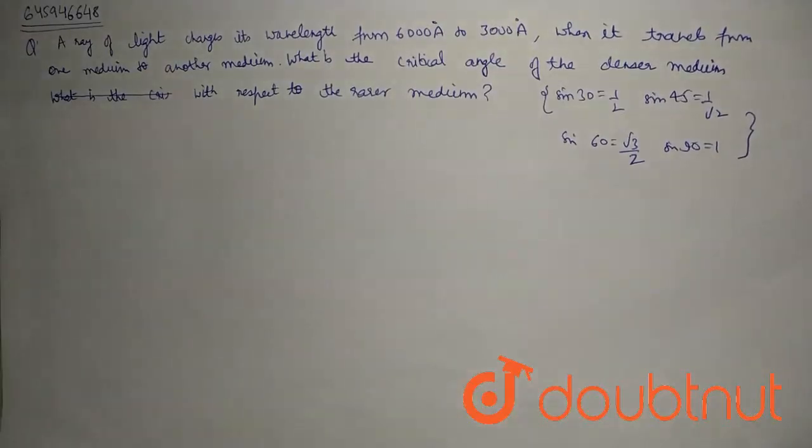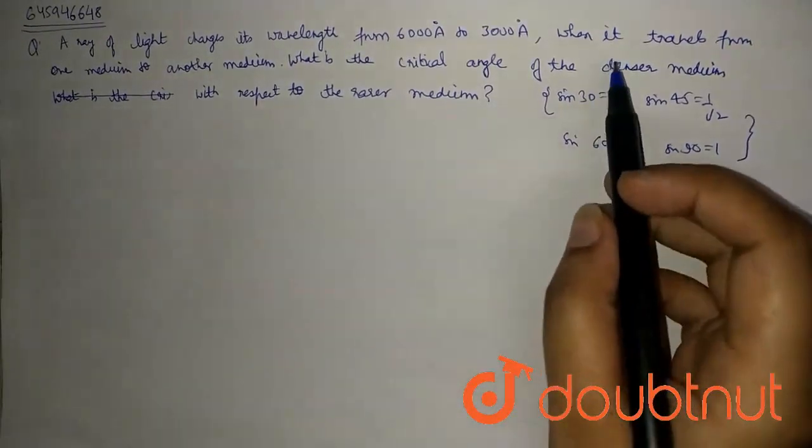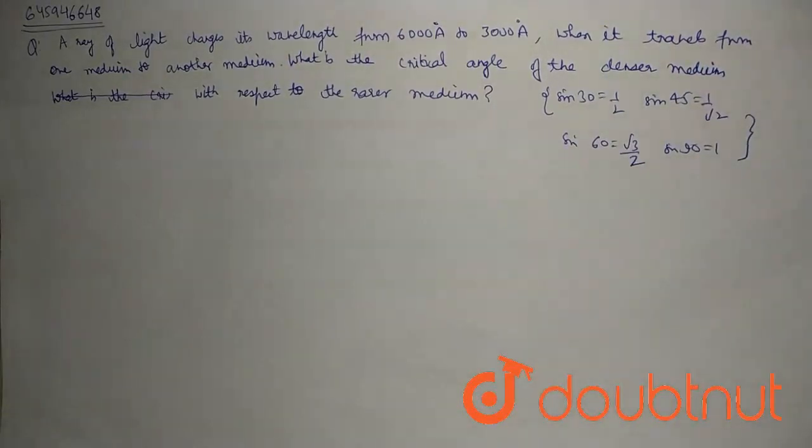There is a ray of light which changes its wavelength from 6,000 angstrom to 3,000 angstrom when it travels from one medium to another medium.